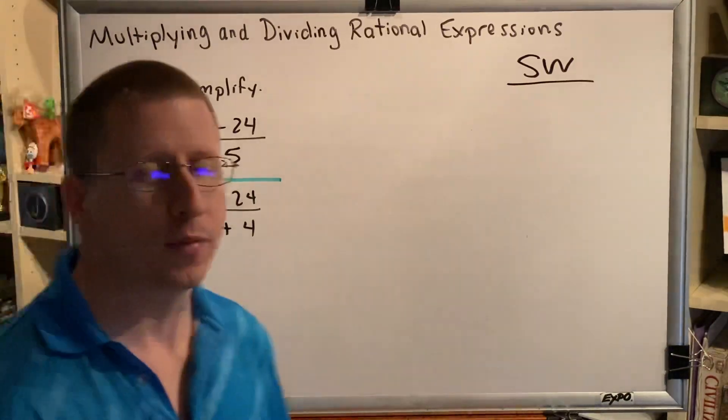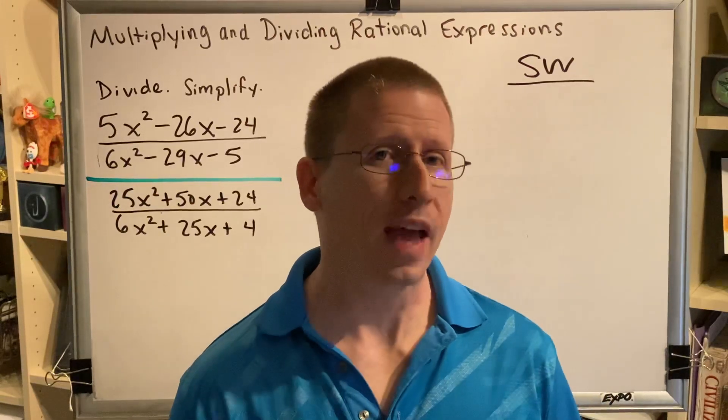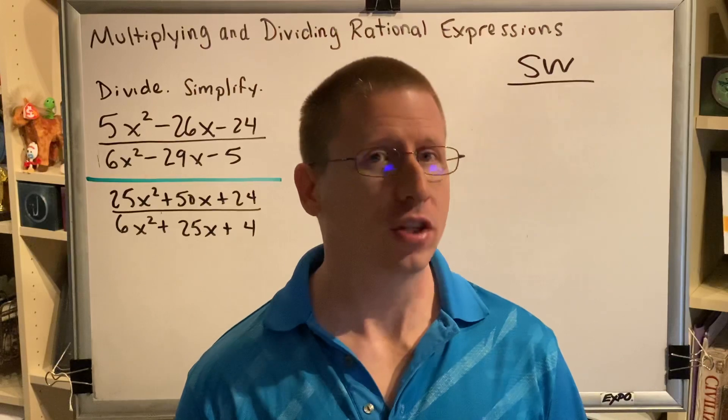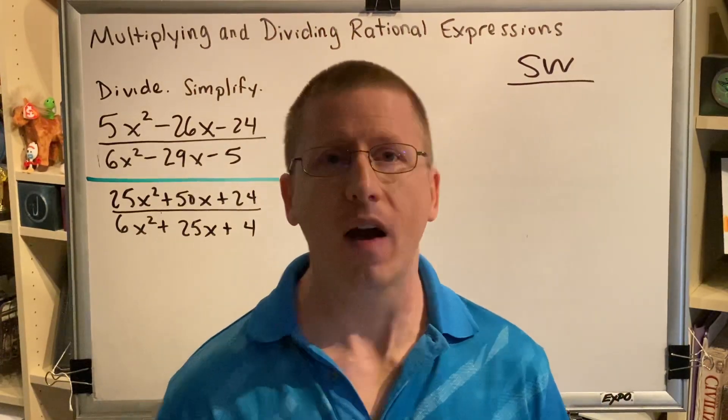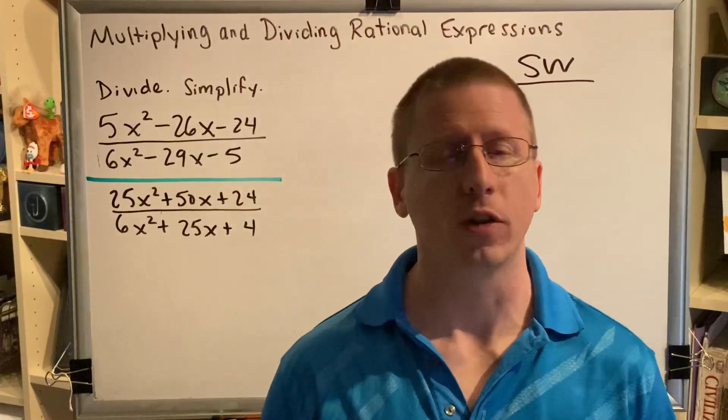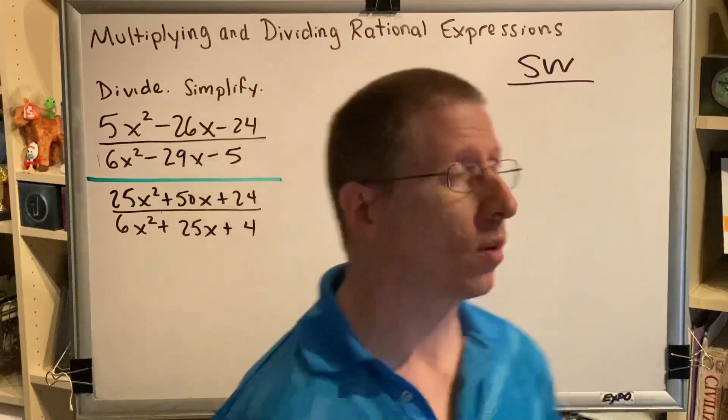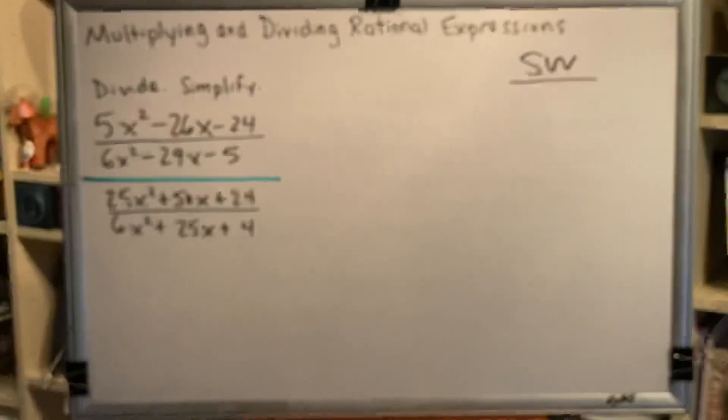The steps for dividing rational expressions are to factor all numerators and denominators, then to combine your fractions into a single fraction using the keep-change-flip rule, and then finally to reduce the resulting rational expression to lowest terms, which means we have to do four factoring problems, 1, 2, 3, and 4, as our very first step.